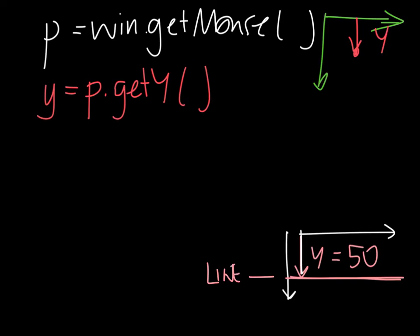I want to know now, is that y greater than this y? Because if it is, that means that the distance where I click the point is much further down than the position of this horizontal line. So let's write what that code might look like. If I say if y, that's this y that I've got from my point, is greater than 50.